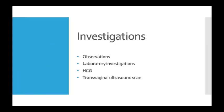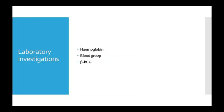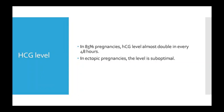Ectopic pregnancy ko investigate kaise karte hain? Observation se, laboratory investigation se, aur transvaginal ultrasound scan se. Observation mein BP, pulse aur temperature check karein. Lab mein hemoglobin, blood group, aur beta-hCG test dekhein. Normal pregnancy mein hCG har 48 ghante mein double ho jaata hai. Ectopic pregnancy mein yeh level suboptimal rehta hai — double nahi hota.